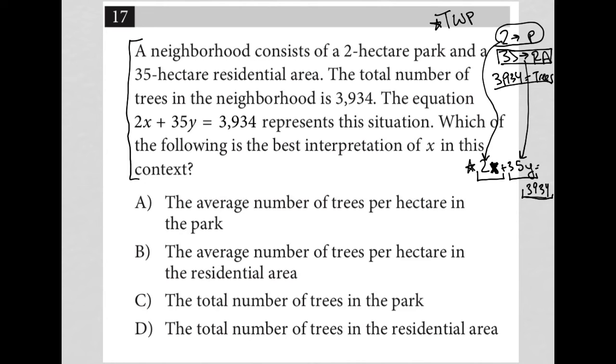Now the next sentence asks: which of the following is the best interpretation of x in this context? Well, I've already determined that x must relate to the park, and this entire equation has to do with the number of trees. So 2x must be a way for us to figure out how many trees are in the park.